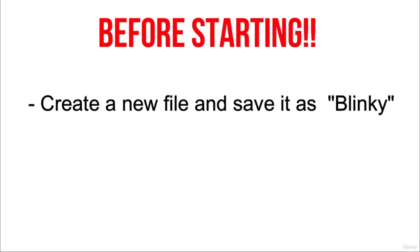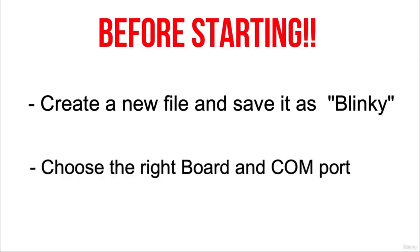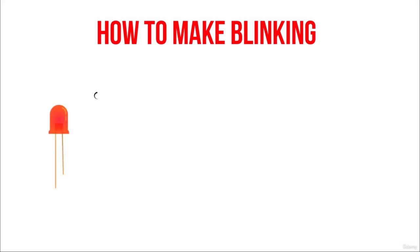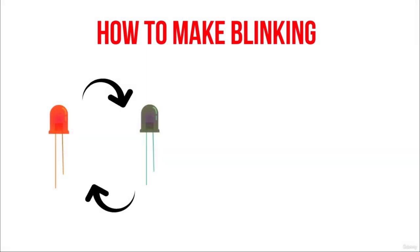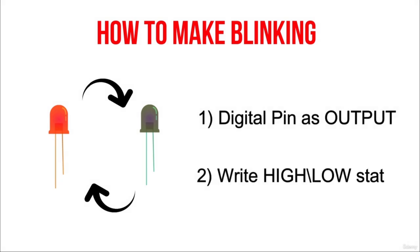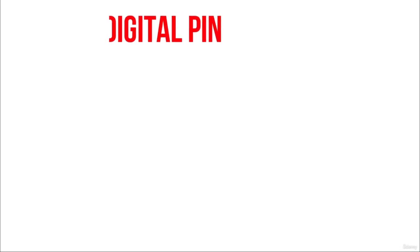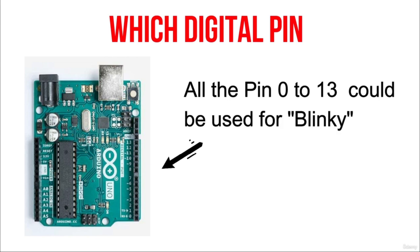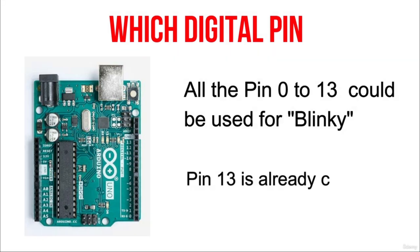Before starting with coding, remember to plug your Arduino into your USB port, then select the Arduino Uno from the board submenu and choose the correct port. To blink an LED, we need to turn it on and off continuously with some delay between these two phases. We will use a digital pin in output mode and write high and low values to that pin to generate the voltage that will drive the LED. We could use any of the 14 digital pins, but in this case we will use pin number 13, since it is already connected to the onboard LED.